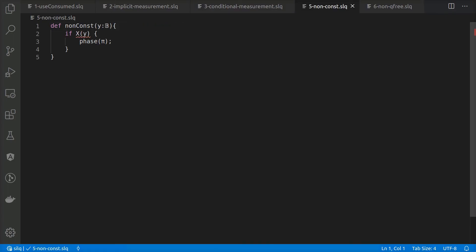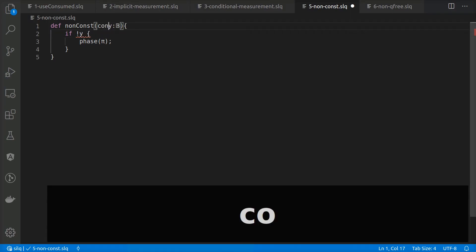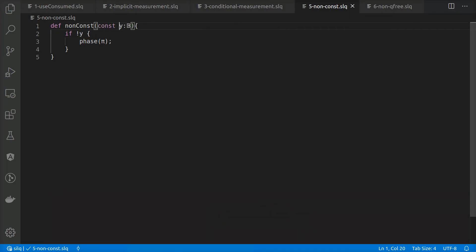Finally, we demonstrate two examples where automatic uncomputation of temporary values is not possible, which is detected by our type system. Here, the NOT operation x consumes its argument y, meaning that y is not available for later uncomputation of the condition. Therefore, this example results in a type error.